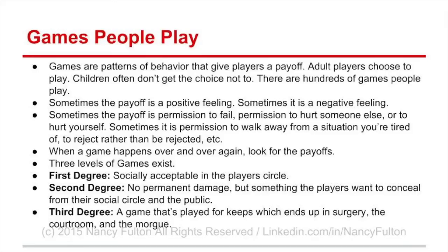Here's the most important thing about games: there are three levels. A first-degree game is socially acceptable — you can play it in mixed company and nobody tries to hide that they're playing it. It might be a little screwed up or a little bit mean, but nobody's hiding anything. The second degree of a game: there's no permanent damage, but the players usually don't want anybody to know they're playing it — it's kind of a secret or behind-closed-doors game. And then there's a third-degree game: one that is played for keeps, and somebody ends up dead, or in surgery, or in a courtroom, or at the morgue.